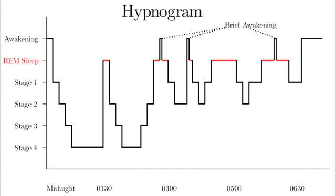Name the sleep stage and the percent of total sleep time in young adults. First is awake with eyes open, then awake with eyes closed, then stage N1 which is 5% of total sleep time, then stage N2 which is 45%, then stage N3 which is 25%, and then REM sleep which is also 25% of total sleep time in young adults.